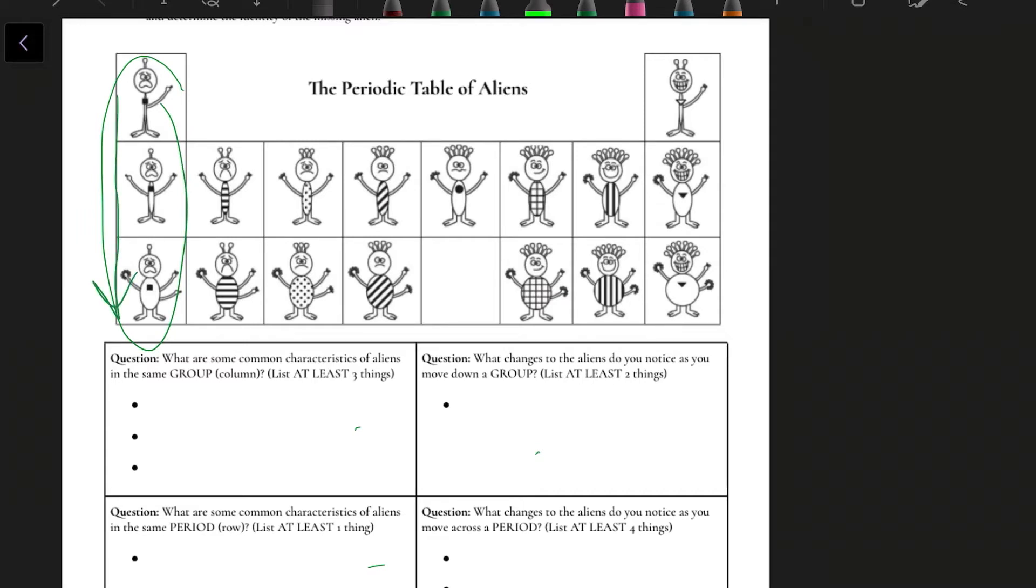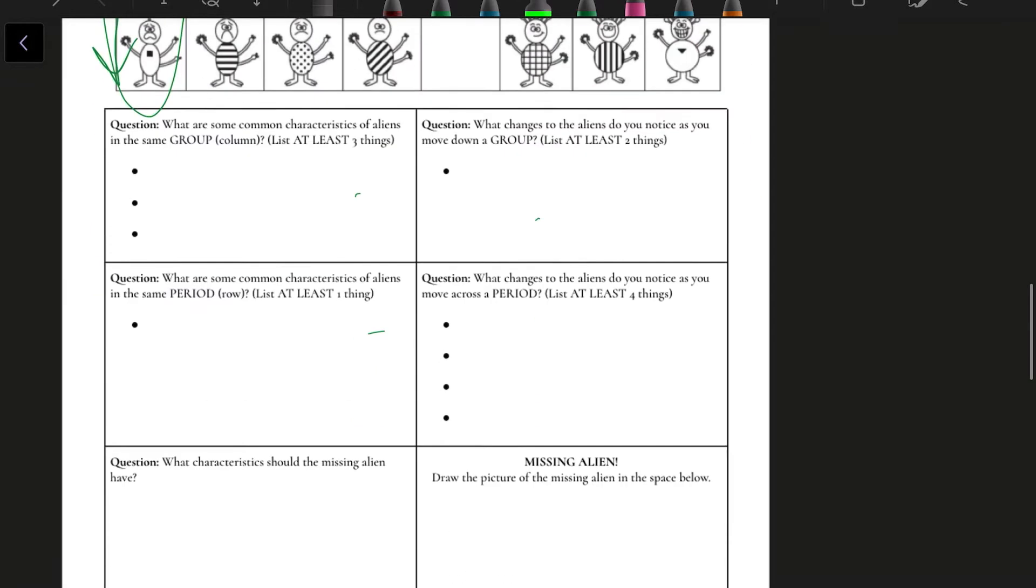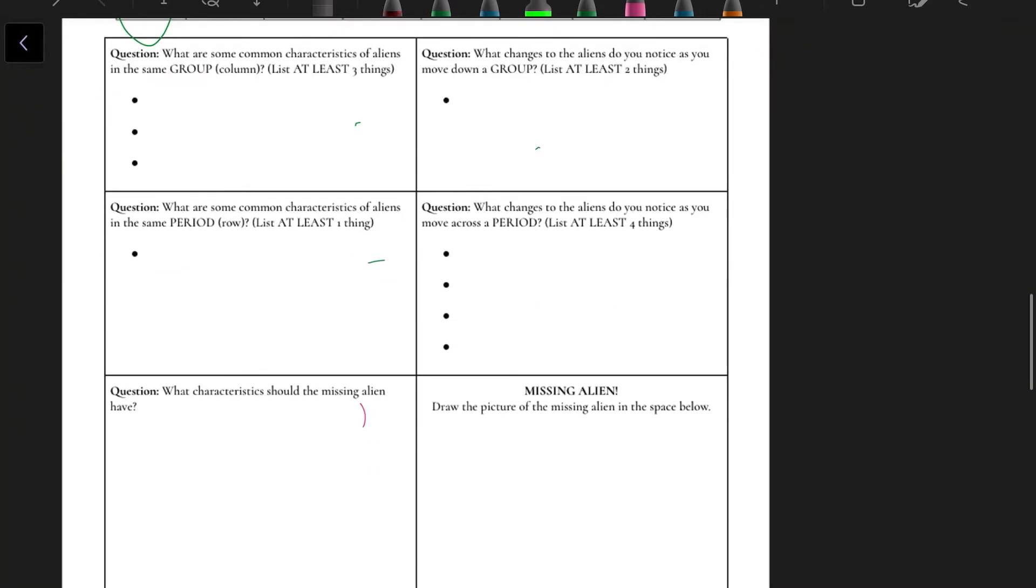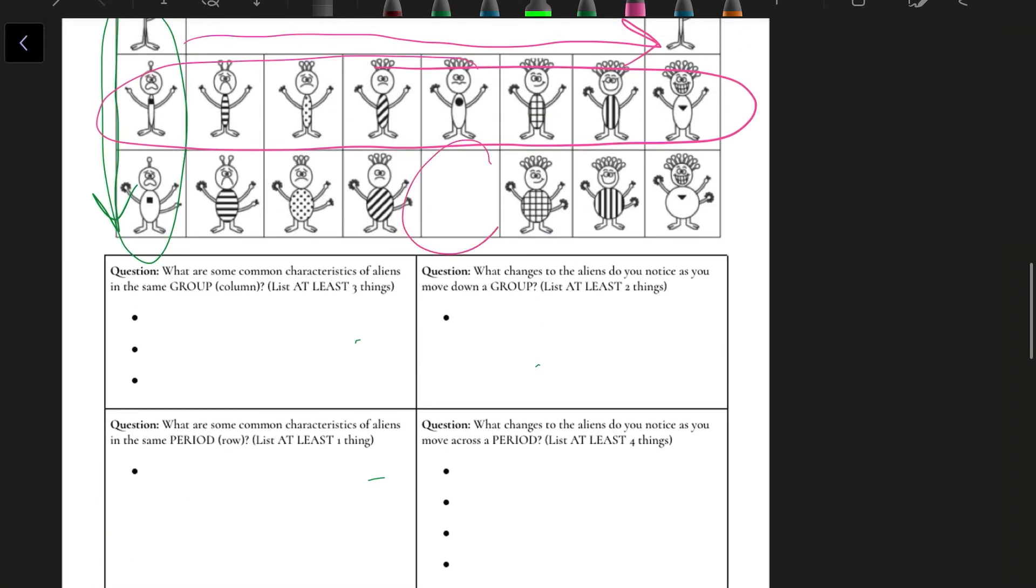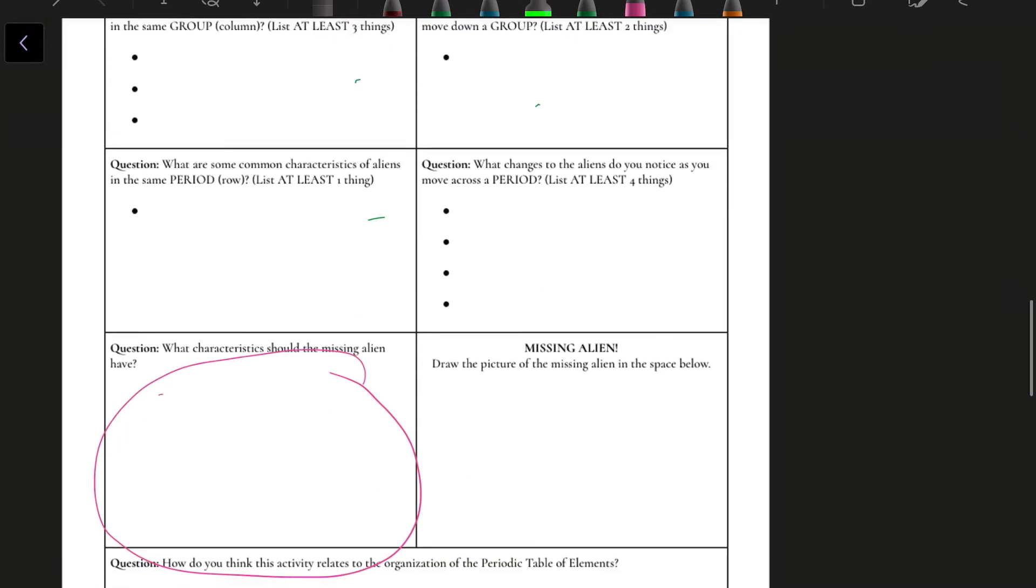The other two questions talk about what stays the same when you go horizontally and what changes as you go horizontally. Once you're able to figure out all of those patterns, you can figure out what your missing alien looks like. You'll be able to list out the qualities that the alien should have and draw a cute little picture of it.